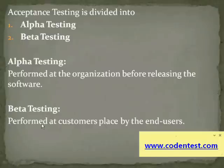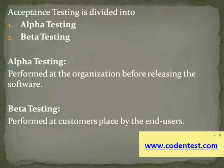Beta testing is testing performed at the customer place by the end users. Feedback is taken from the end users, and if the feedback is positive the software is released; otherwise some changes are made before releasing the software. So that's acceptance testing.